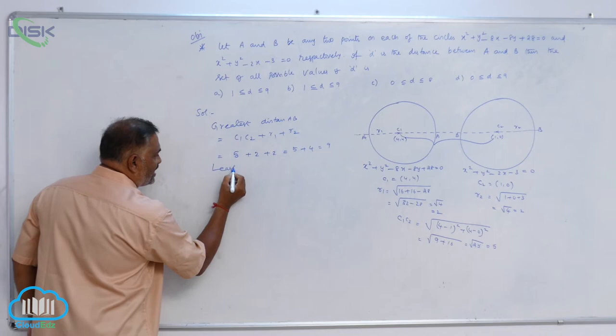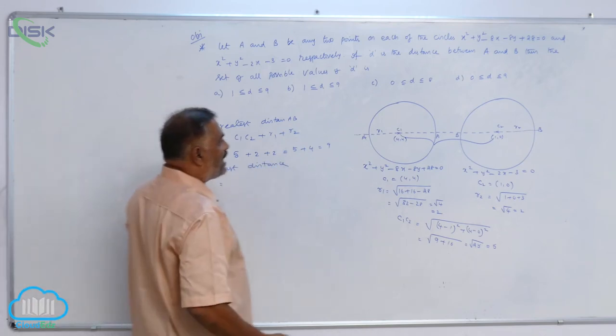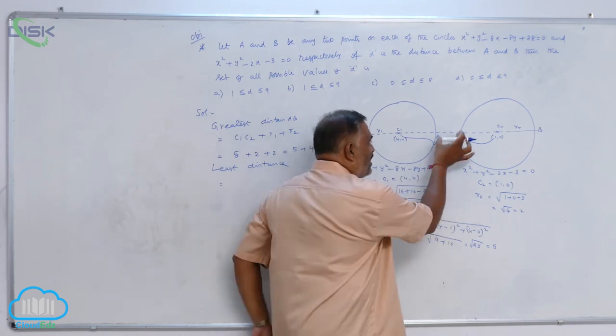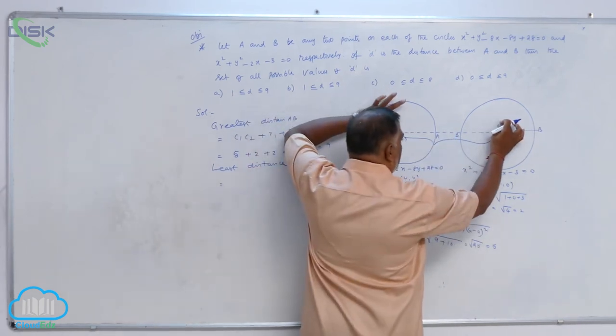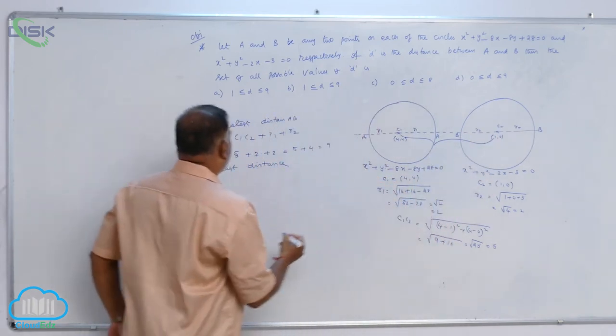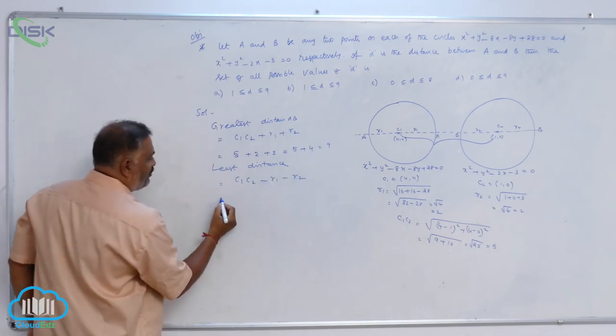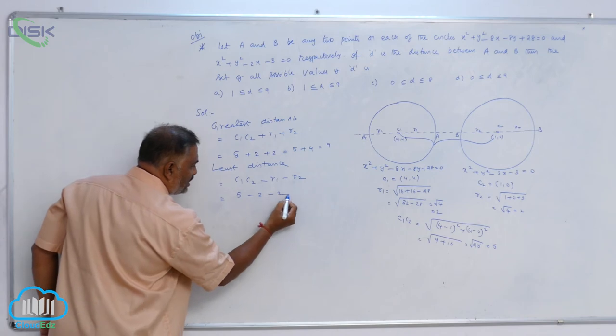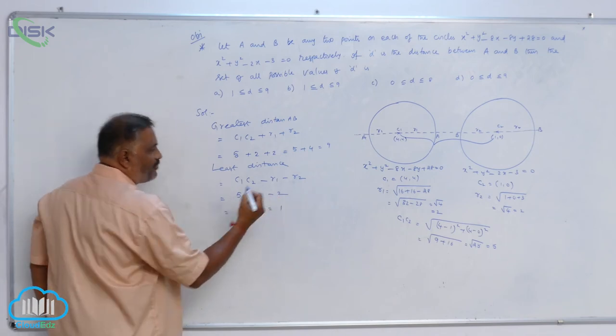So this is the maximum distance. The least distance is given by C₁C₂ minus R₁ minus R₂. This is R₁, this is R₂. So C₁C₂ - R₁ - R₂ = 5 - 2 - 2 = 1.